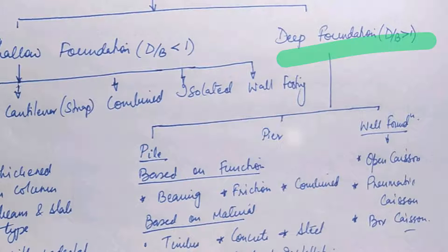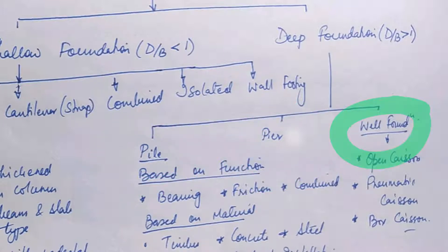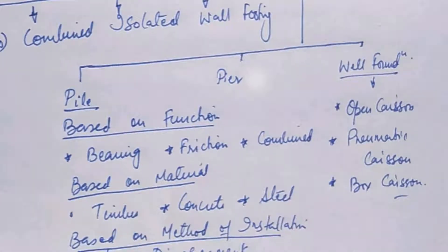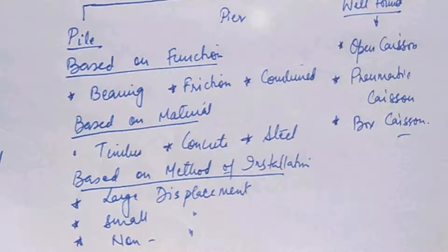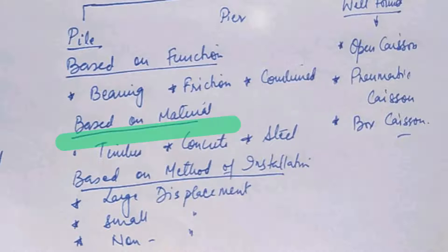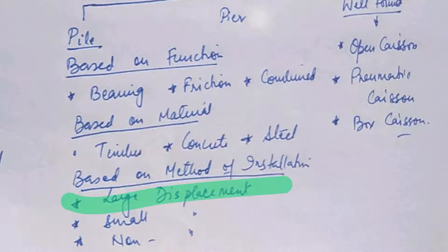Deep foundations are also of different types: pile foundation, pier foundation, or well foundation. Well foundations can be further classified as open caissons, pneumatic caissons, and box caissons. Piles are subdivided by function into bearing pile, friction pile, or combined bearing and friction pile. By material: timber piles, concrete piles, or steel piles. By method of installation: large displacement pile, small displacement pile, or non-displacement pile.